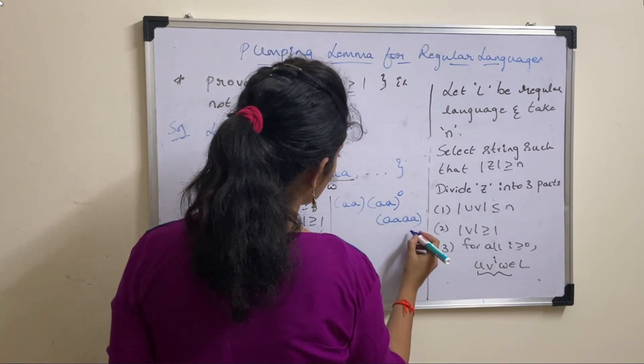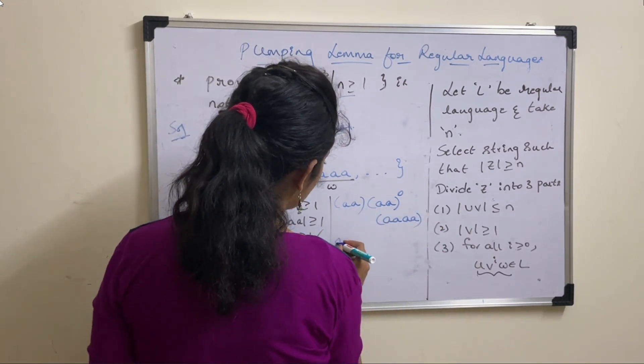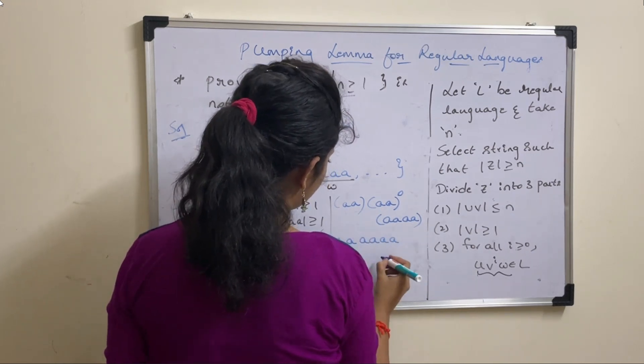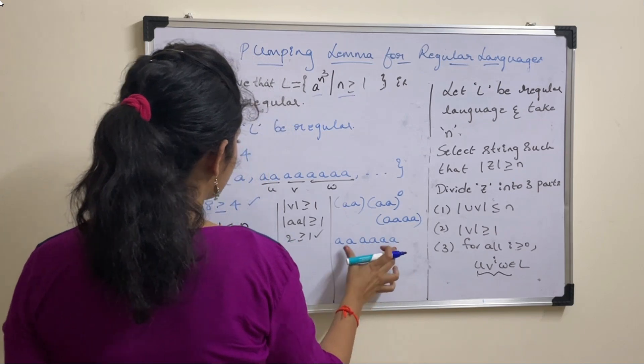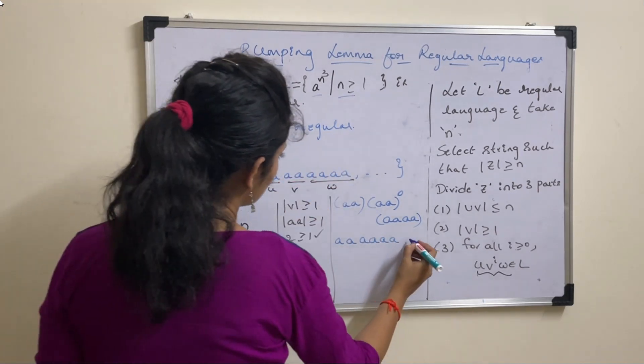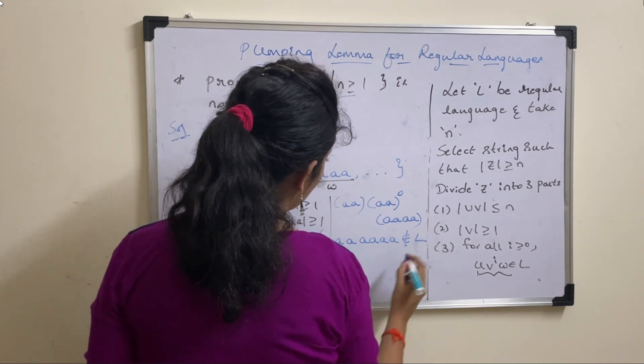Check whether this belongs to language or not. So it gives you string a a and 4 a's. So check if you have 6 a's string in this language. So there is no such string. So it does not belong to language.